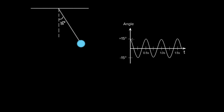Every simple harmonic oscillator has a characteristic period of motion. The period of motion is the time it takes to complete one full cycle — the time it takes to swing from here all the way to there and all the way back. In this graph it's written as 0.5 seconds, but the period of every simple pendulum depends on the characteristics of that pendulum and the environment it's in.